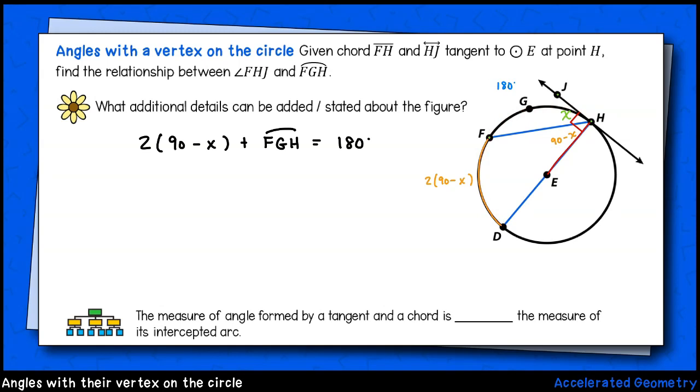We have 2 times 90 minus X plus arc FGH equals 180 degrees. If I expand this out, I have 180 minus 2X plus arc FGH equals 180 degrees. I'm going to start by solving for arc FGH. In this case, I end up with arc FGH equals 2X.